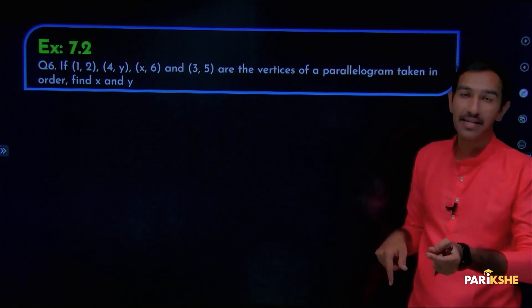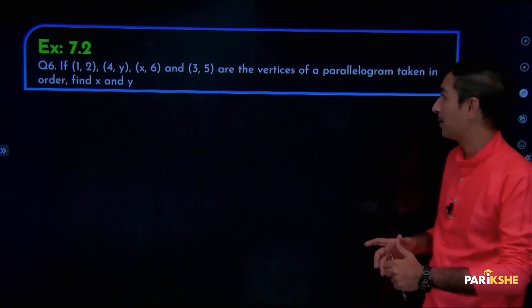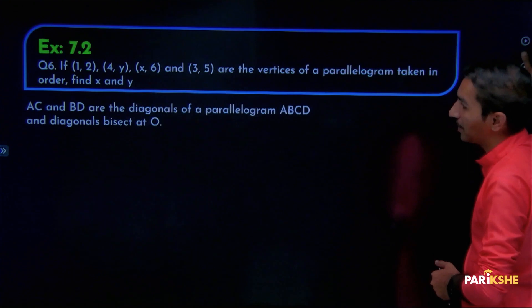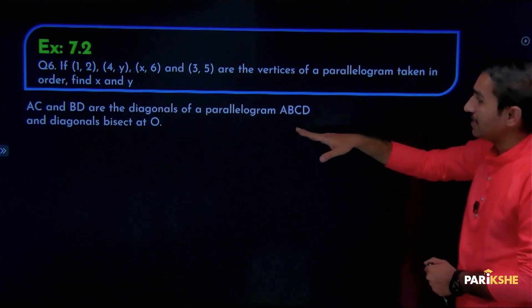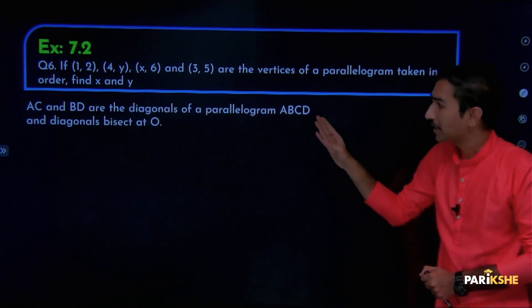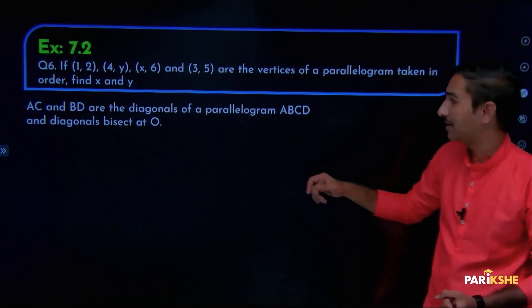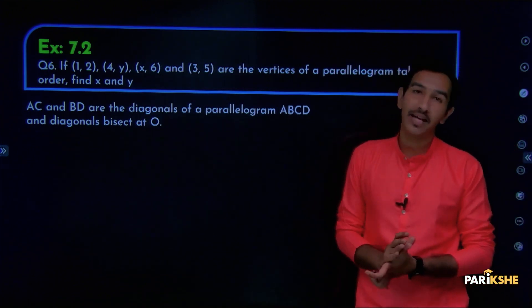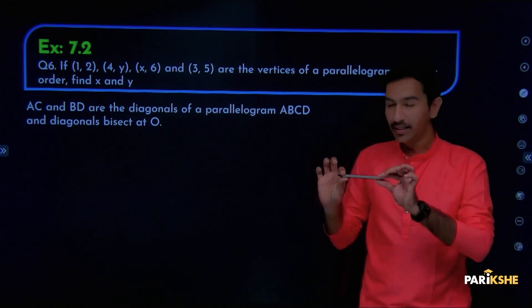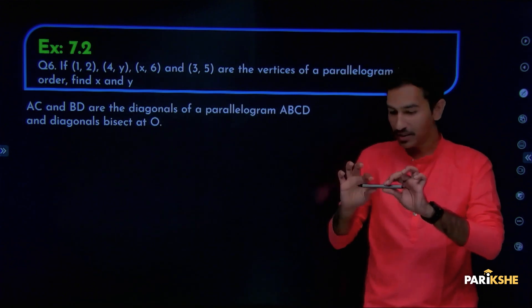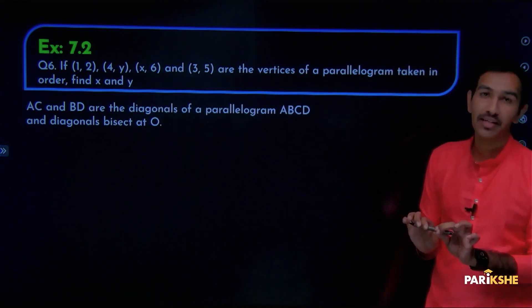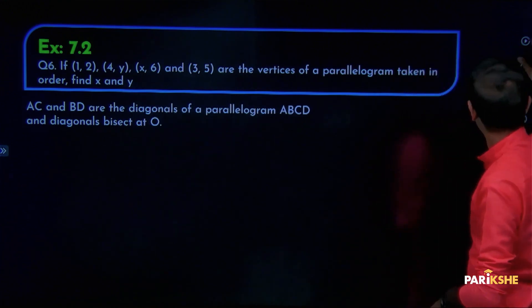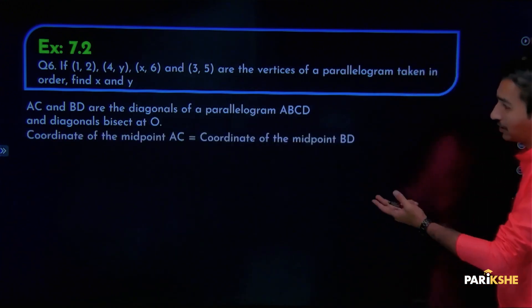Diagonals of the parallelogram bisect each other — naapkait koli idhuna. Taken in the order, find x and y. AC and BD are the diagonals of the parallelogram. Diagonals bisect, dividing into 2 equal halves. Erudhu samaabhaagadalli vibhaagisudhikna venantta — bisect andta karitthi vi. So bisect at O.